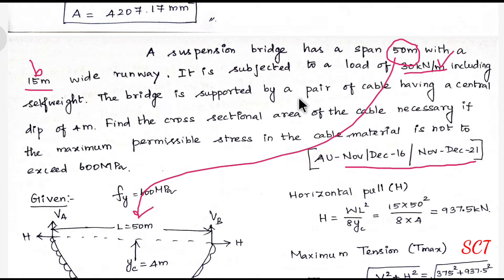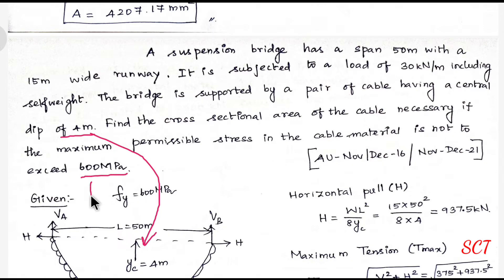The bridge is supported by a pair of cables with a central dip of 4 meters, so the YC value is 4 meters. We need to find the cross-sectional area necessary if the maximum permissible stress in the cable is not exceeding 600 MPa. The FI value is 600.